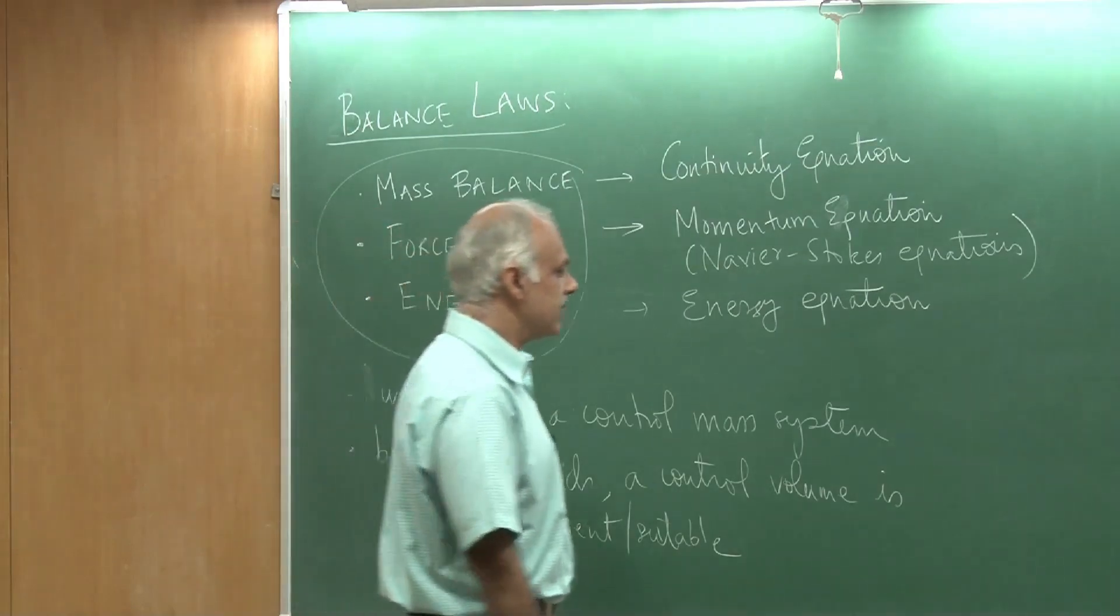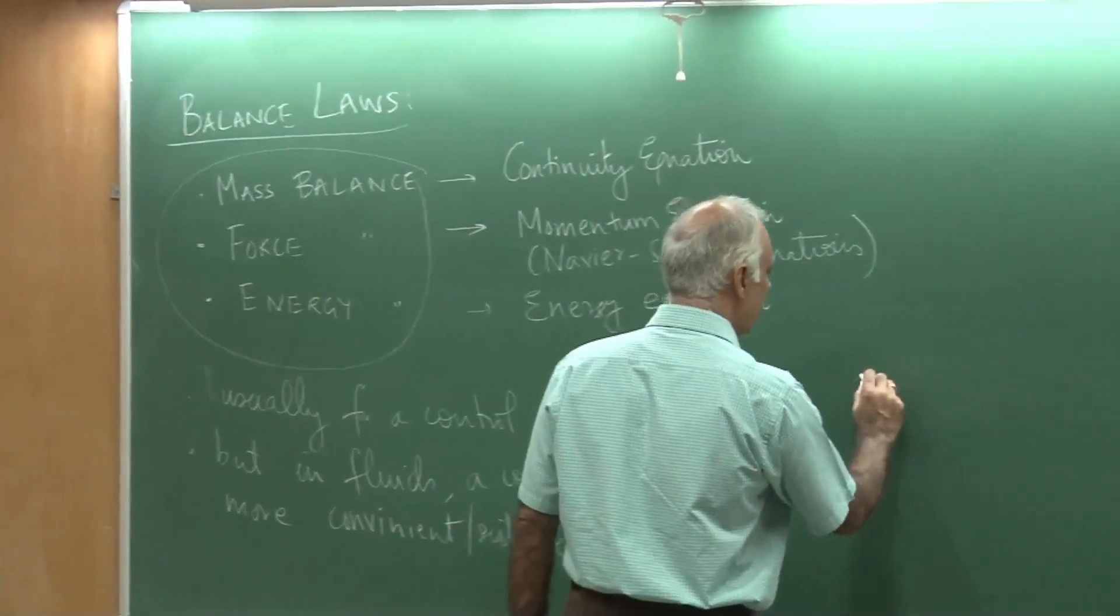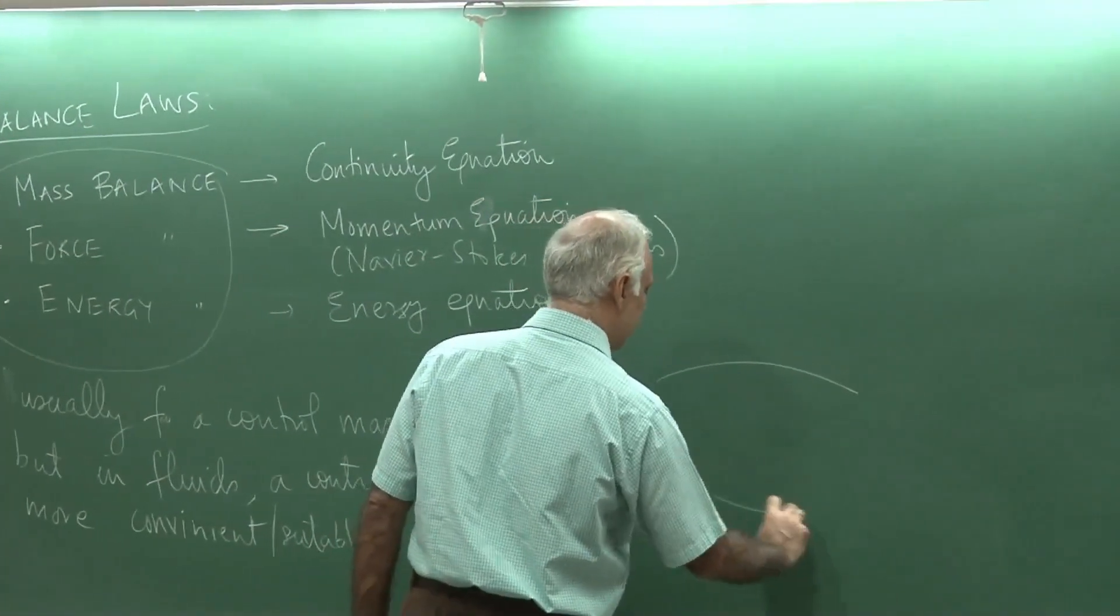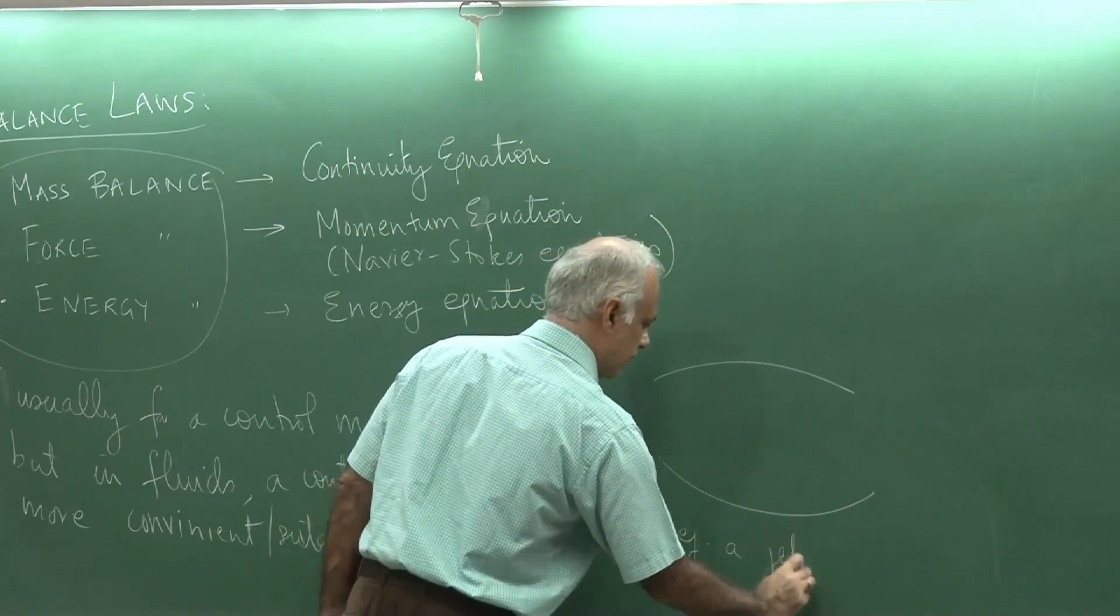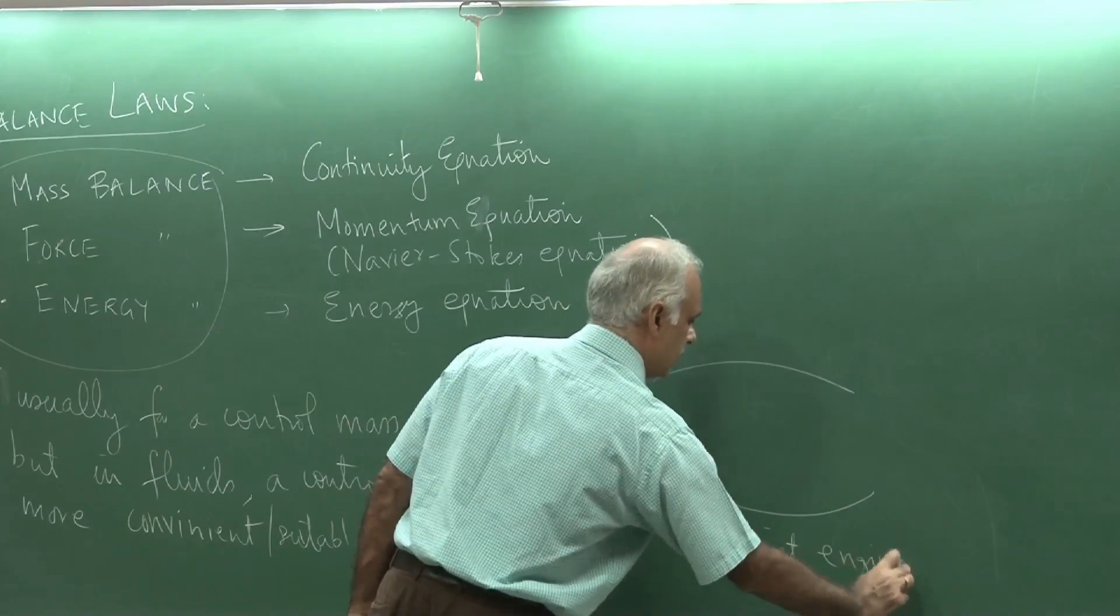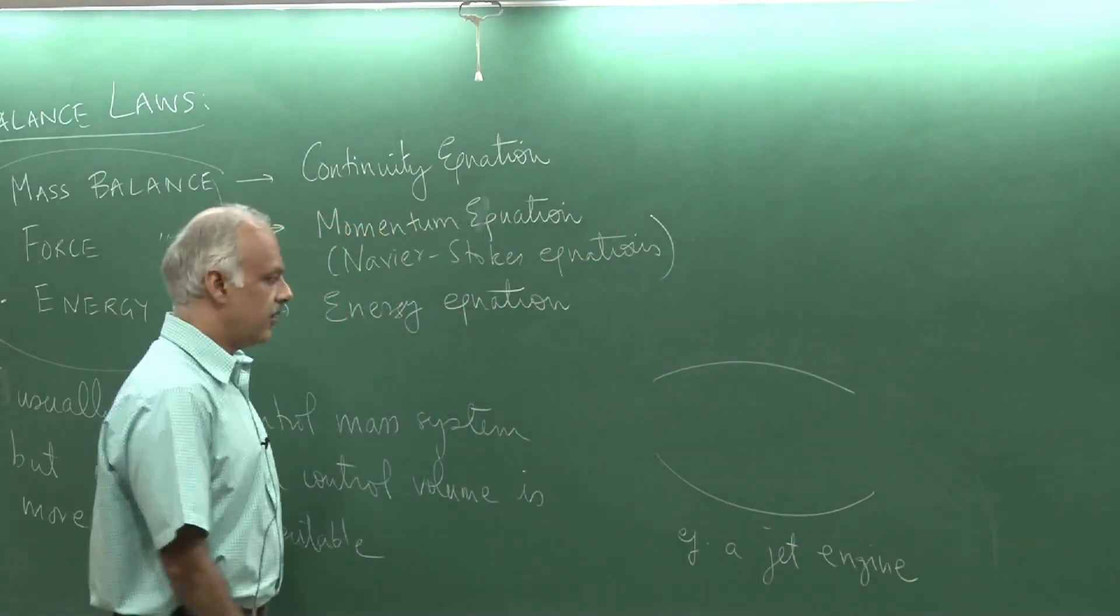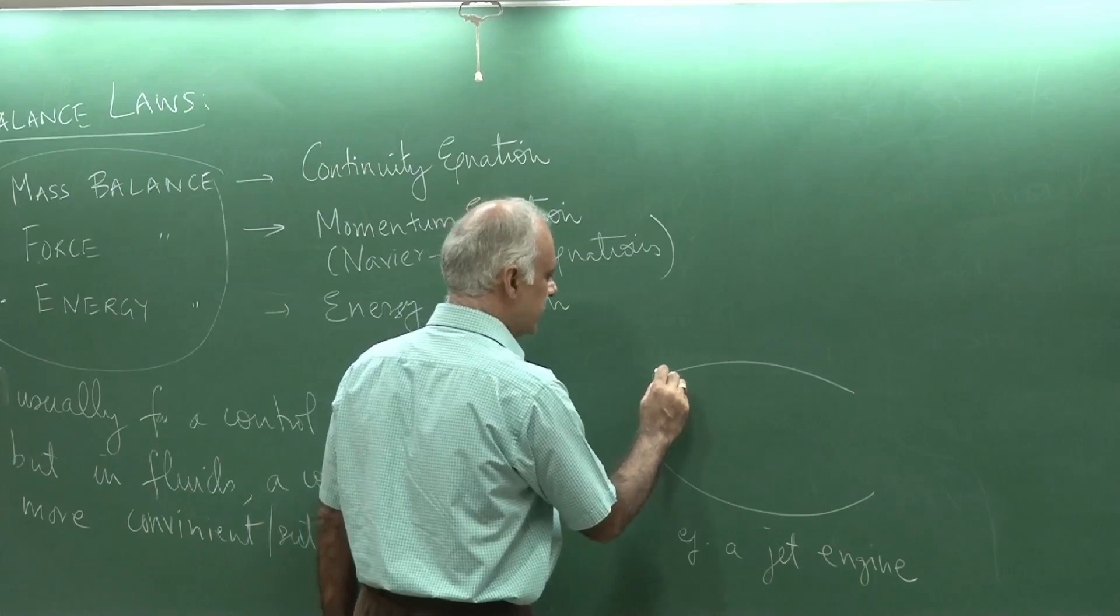That is a control volume approach. An example of a control volume for example would be a jet engine. Here is a cross section of a jet engine, where you see this is the cowl of the engine.